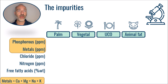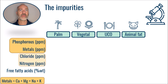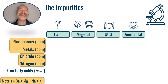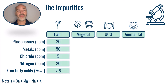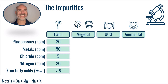We also look at chloride, which can be in inorganic or organic form. Finally, nitrogen is also important for downstream units that we will detail a little later. Thus, pine oil contaminants are fairly precisely characterized with overall few metals, little phosphorus, little chlorine, little nitrogen, and also few free fatty acids.